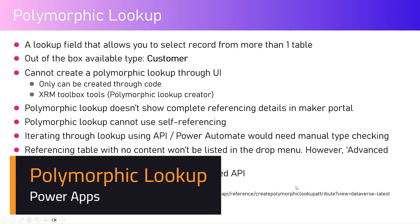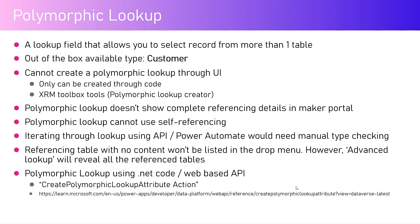In this video, let's talk about polymorphic lookup. In Dynamics 365 and Power Platform, when we use a Dataverse table, we can create a column of various data types. One of those data types is a lookup column, which lets us look up data from one table to another. There may arise a situation where we need to look up to multiple tables — a lookup field that allows a user to select a record from more than one table.